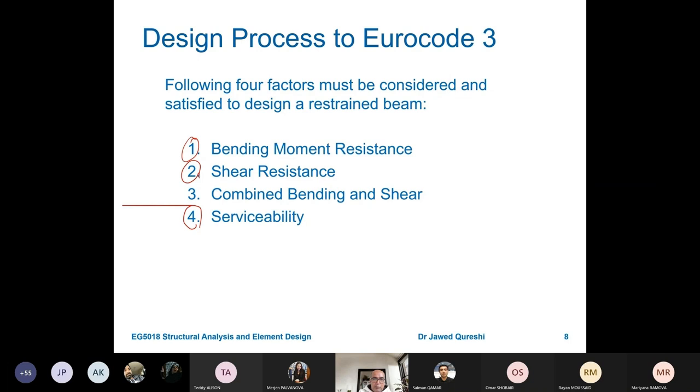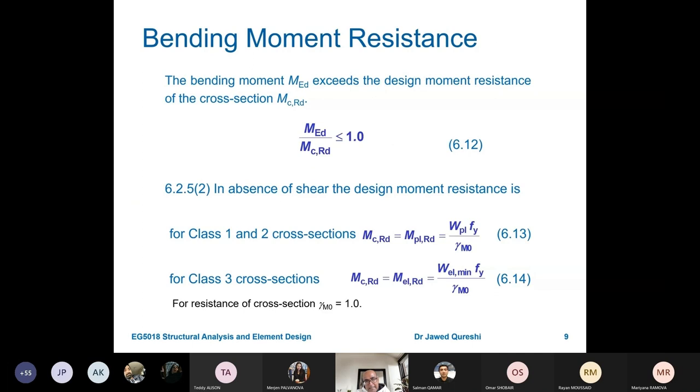We have combined effect of bending and shear. But this does not really happen in normal beams. It happens when we have heavy concentrated loads, when we are designing plate girders. But normally this is not a big issue.